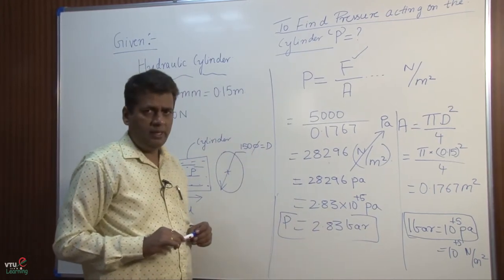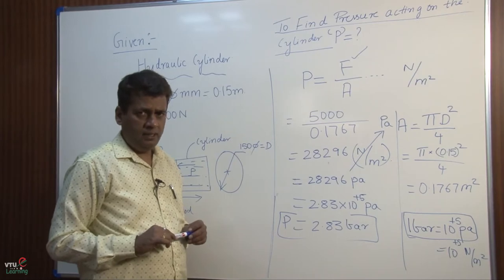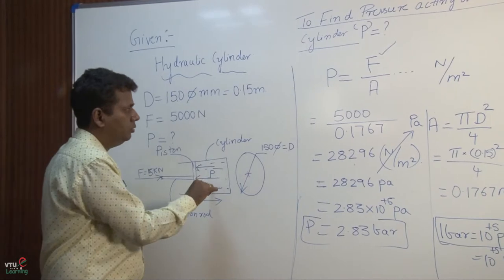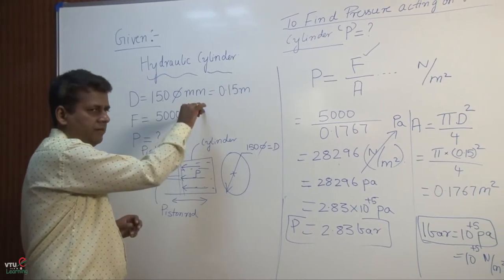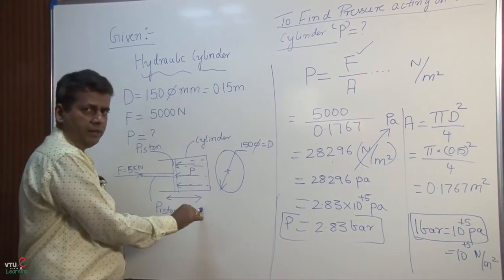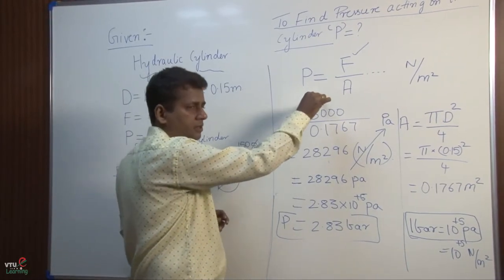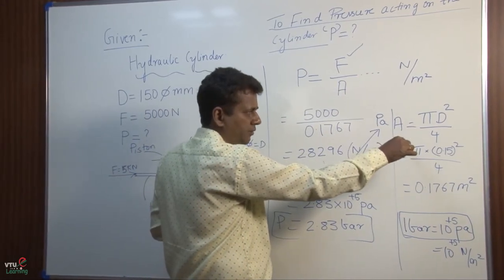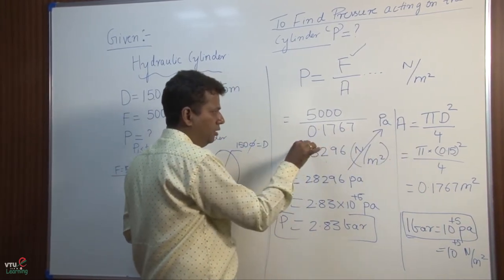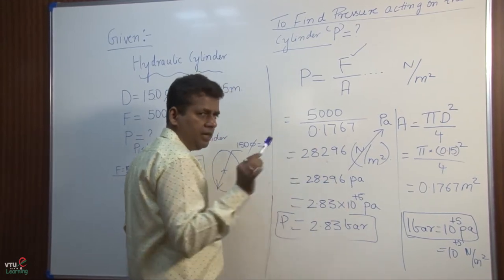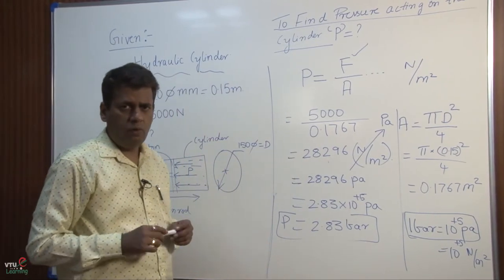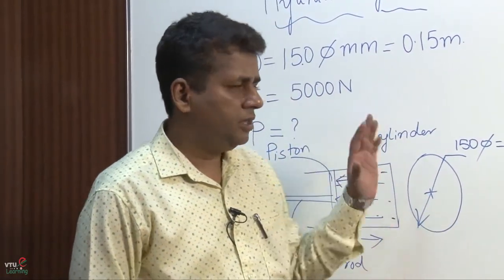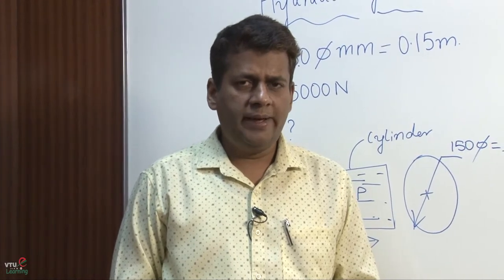This has to be done systematically, step by step — minimum three steps. Step 1 is listing the given parameters, step 2 is drawing the configuration diagram, step 3 is writing the main equation, step 4 is the auxiliary or sub-equations, then substitutions and the final answer. This is the flow. After completing this problem and understanding the variables involved, let us move on to the next problem.